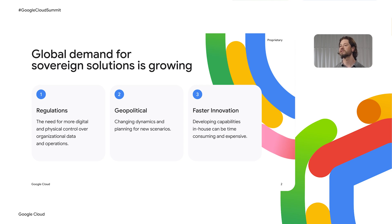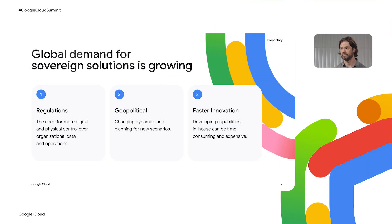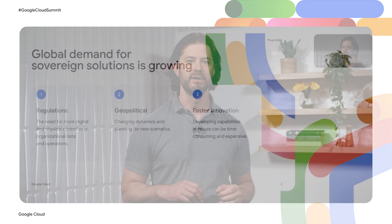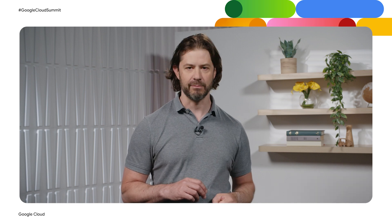Second, geopolitics. The world is changing quickly, and organizations need to plan for new scenarios. This requires a new level of control and resilience to ensure that critical operations are protected, no matter what happens on the global stage. And third, faster innovation. In this environment, building your own sovereign capabilities from scratch is incredibly time-consuming and expensive. Our customers need to innovate faster, not get bogged down in building and managing complex infrastructure. They need to leverage the power of the hyperscale cloud, but in a new way that meets these new stringent requirements.